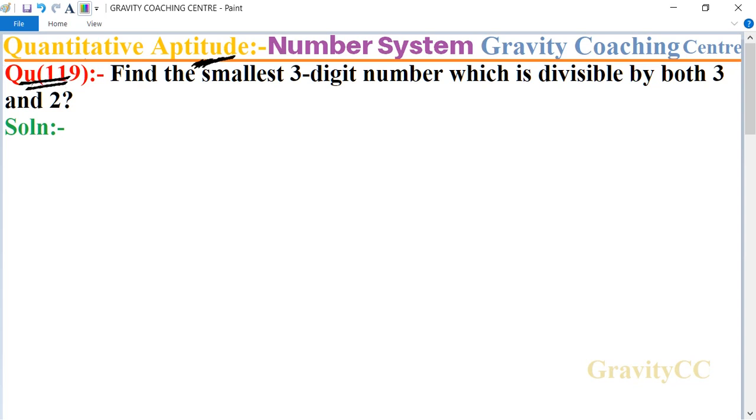Find the smallest three-digit number which is divisible by both 3 and 2.